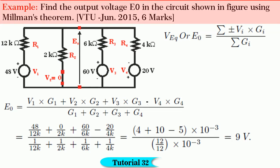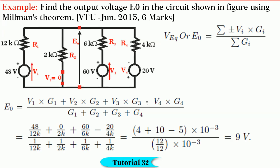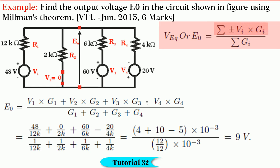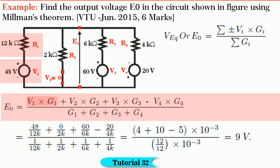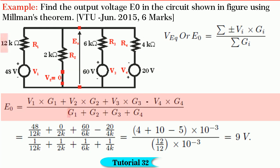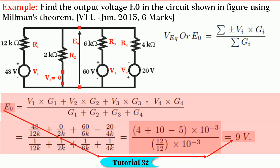Friends, we shall solve yet another problem to find E0 using Millman's theorem. Note that the 48 V and 60 V sources have the same polarity, whereas the 20 V source is in the opposite direction, and V2 = 0. Using E0 = summation of ±Vi·Gi / summation of Gi: E0 = (V1·G1 + V2·G2 + V3·G3 − V4·G4) / (G1 + G2 + G3 + G4). Substituting and solving, we get E0 = 9 volts.